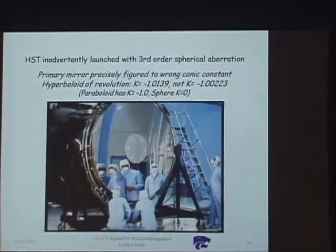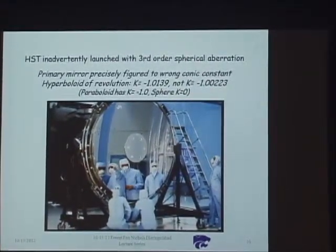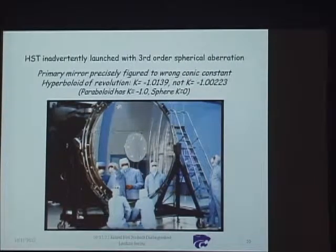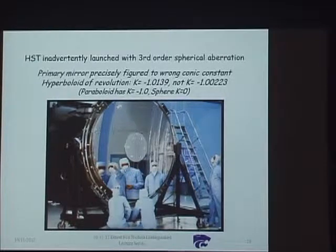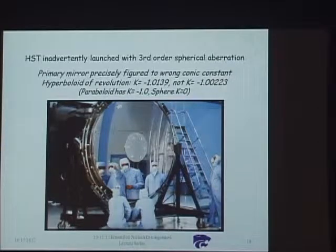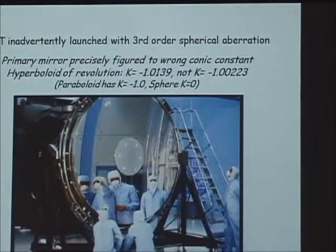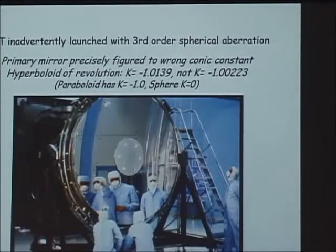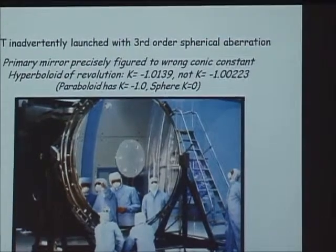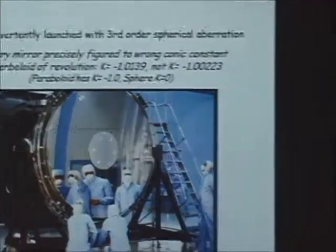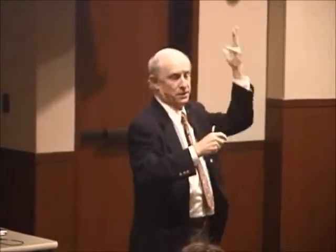The conic constant — if it's less than minus one, it's a hyperbola. It was supposed to be minus 1.00223. Instead it turned out to be a different number. That introduced spherical aberration. It was due to the fact that the yardstick they used was inadvertently miscalibrated. There was a spacing error between mirrors in a thing they call the reflective null corrector. And they launched the sucker.